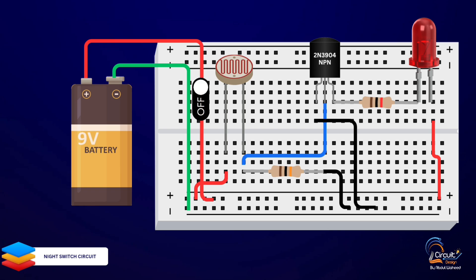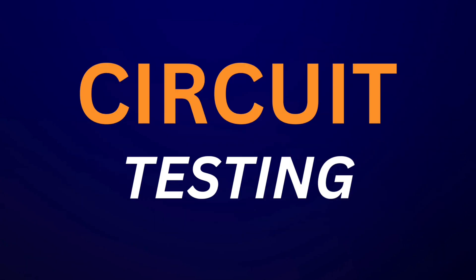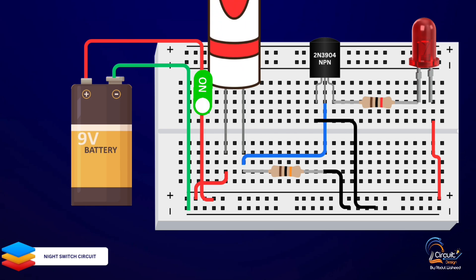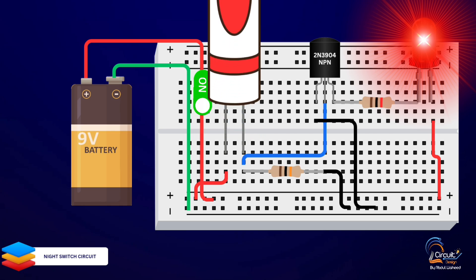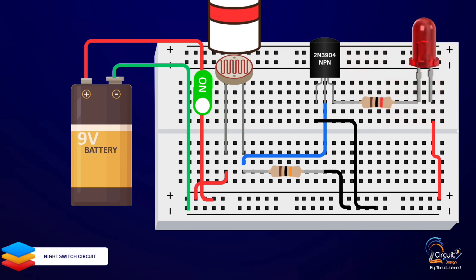Testing the circuit. Let's see it in action. I'll cover the LDR to simulate darkness, and you can see the LED light up. When I uncover it, the LED turns off. Simple and effective.